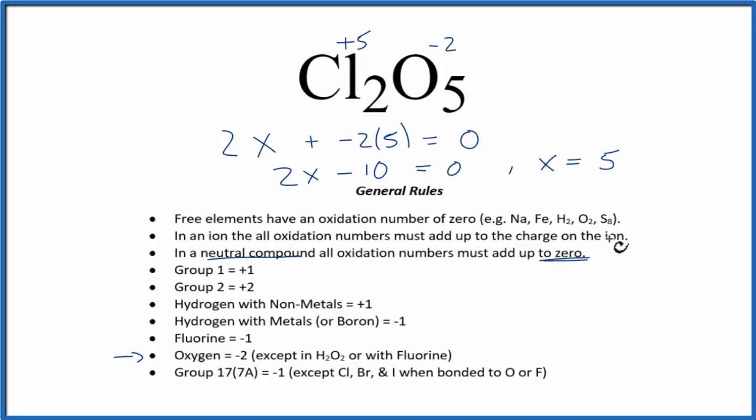So to recap, we found the oxidation numbers for the element we knew, then we used that information, along with the fact that oxidation numbers will all add up to zero for a neutral compound, to find the one we didn't know. This is Dr. B with the oxidation numbers for Cl2O5, dichlorine pentoxide. Thanks for watching.